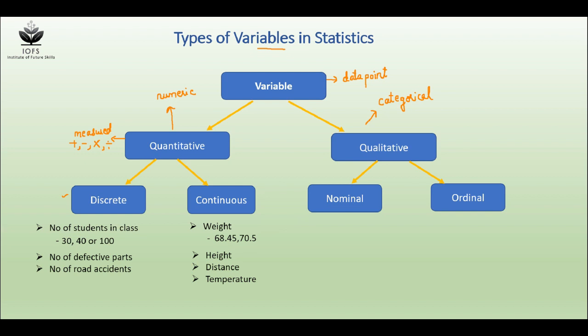Qualitative data are divided into two parts: one is nominal and the other is ordinal. Nominal data have names or labels associated with them and they do not have any order. There is no intrinsic order in nominal data.